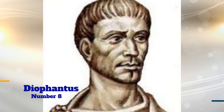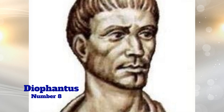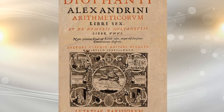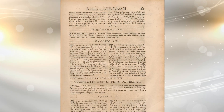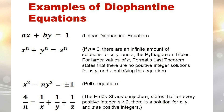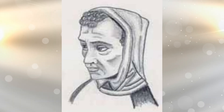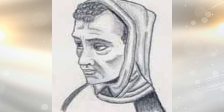Number 8: Diophantus. Diophantus was an Alexandrian mathematician who was the author of a series of books called Arithmetica. His text dealt with solving algebraic equations. Diophantine equations and Diophantine approximations are important areas in mathematical research. Diophantus was the first Greek mathematician who recognized fractions as numbers, and thus allowed positive rational numbers for coefficients and solutions.